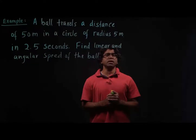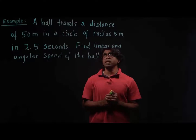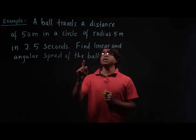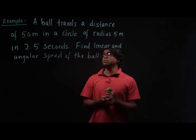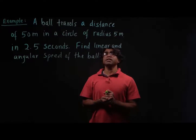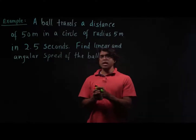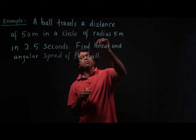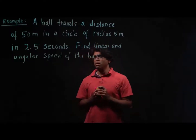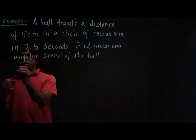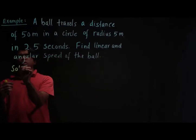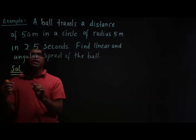Let's consider another example of linear and angular speed. A ball travels a distance of 50 meters in a circle of radius 5 meters in 2.5 seconds. Find the linear and angular speed of the ball. First, I'm going to write down what is given in the question.